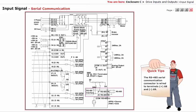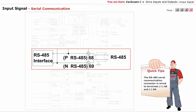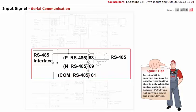The RS-485 serial communication connector is wired to terminals 68 and 69. Terminal 61 is common and may be used for terminating shields only when the control cable is run between VLT drives, not between drives and other devices.